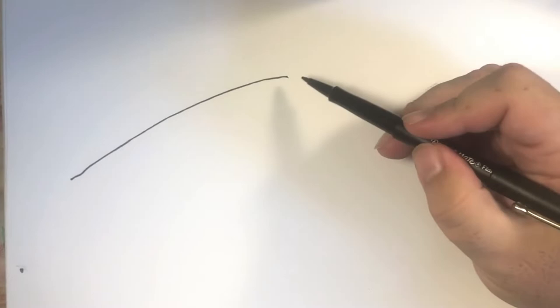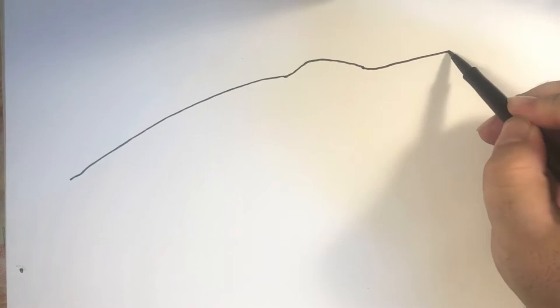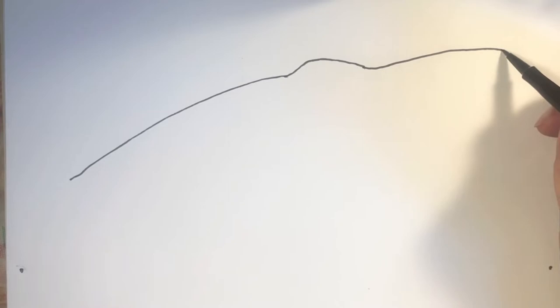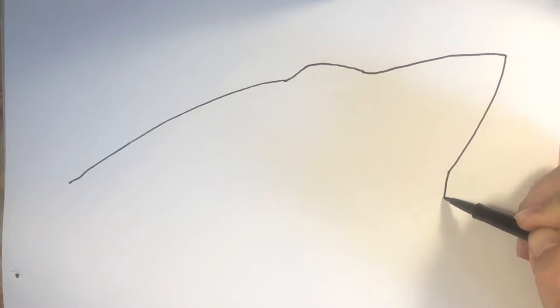We're going to start with a long curved line that starts right about here and curves up like this. We'll make a little bump for the eye and then bring it up a little further toward the end of the nose. After that, right here at the tip of the nose, we're going to bring this line down like this and then make it curve out for the upper jaw of the shark.